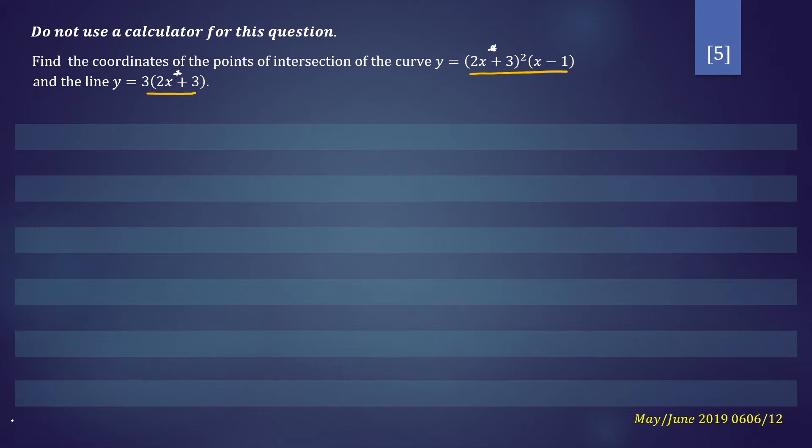So let's combine our equations. We have 2x plus 3 all squared times x minus 1 equals 3 bracket 2x plus 3. Let's have our expression all on the left side. So we'll have 2x plus 3 all squared times x minus 1 minus 3 times 2x plus 3 equals 0.